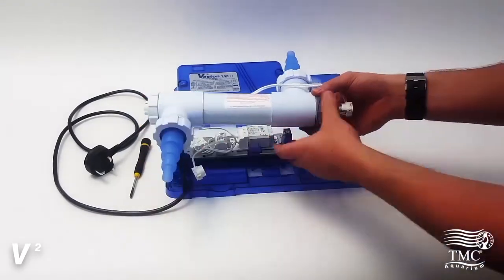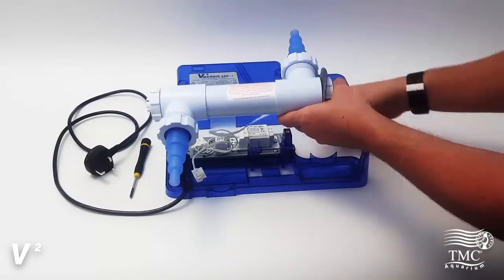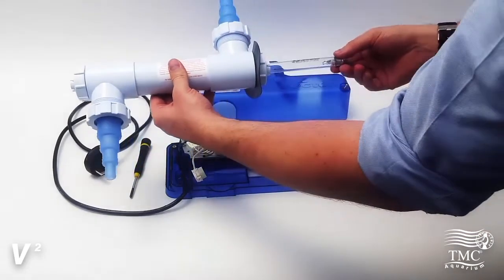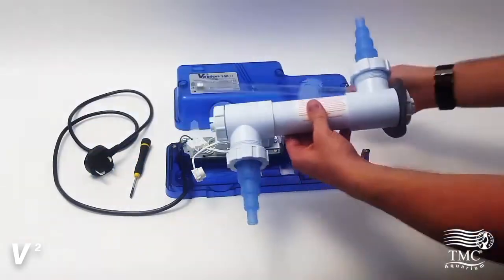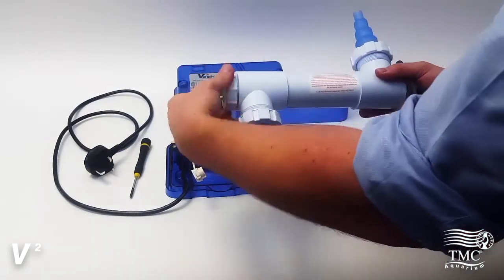Once inside you undo the cables and slide out the UV lamp. You will need to change your lamp at approximately 6 to 12 months, with 6 months being the optimum.